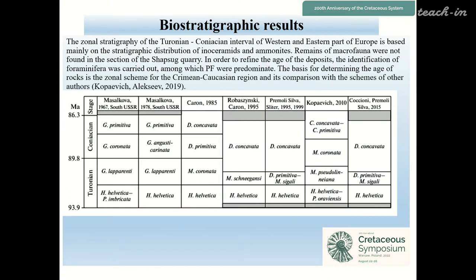Now about biostratigraphic results. The zonal stratigraphy of the Turonian-Coniacian interval is based mainly on the stratigraphic distribution of inoceramids and ammonites. Remains of macrofauna were not found in the section of Shapsuk quarry. In order to refine the age of deposits, identification of foraminifera was carried out, among which planktonic forms predominate. The basis for determining the age of rocks is the zonal scheme for the Crimea-Caucasian area and its comparison with schemes of other authors, as published by Kapaevich-Aleksei.